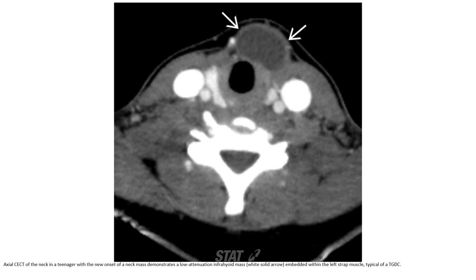Contrast CT of the neck in the same patient with the new onset neck mass demonstrates a low attenuation infrahyoid mass embedded within the left strap muscle, consistent with a thyroglossal duct cyst.